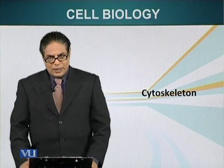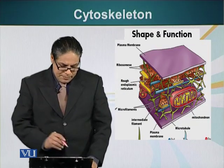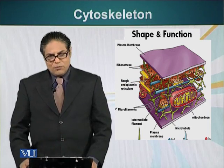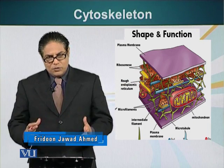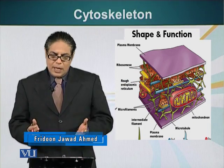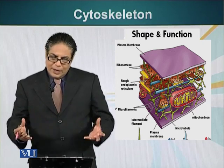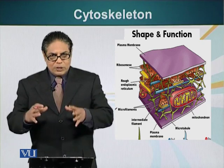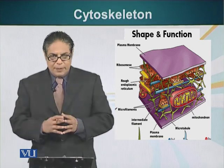In this module we'll talk about cytoskeleton and look at an example of actin, which is a type of cytoskeleton. As mentioned previously, the plasma membrane is fluid and cannot give a specific structure to any entity. It is like a piece of cloth — if you put it on a table it assumes a rectangular shape, and on a ball it assumes a spherical shape.